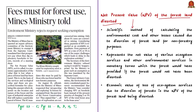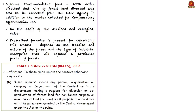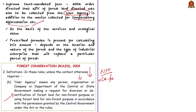NPV is a Supreme Court-mandated fee. The Supreme Court in its 2002 order directed that the NPV of diverted forest land is to be collected from the user agency in addition to monies collected for compensatory afforestation. A user agency means any person, company, or department — even the government — which requests diversion or denotification of forest land for non-forest purposes. The NPV fee is calculated on the basis of services and ecological value, depending on the location, nature of the forest, and type of industrial enterprise replacing it.